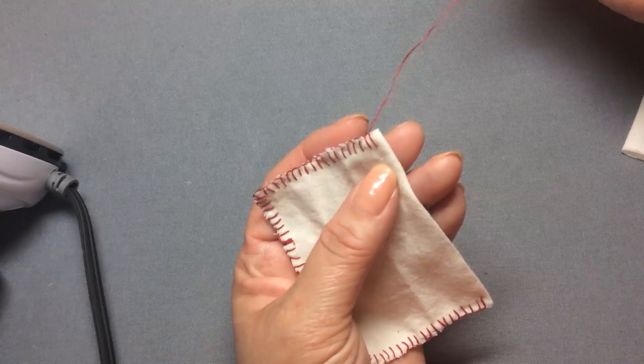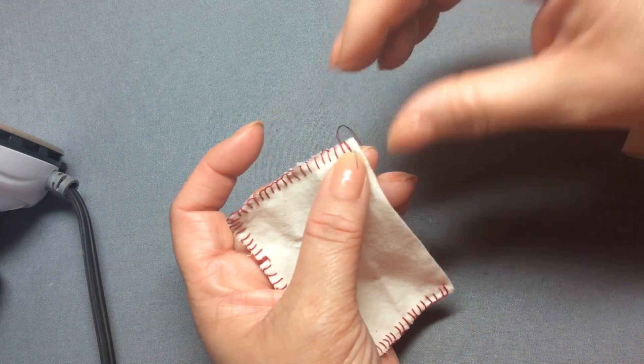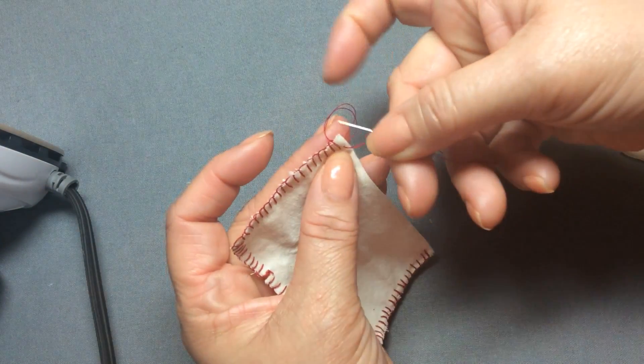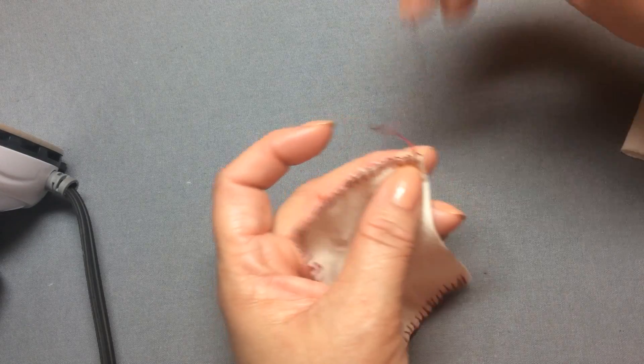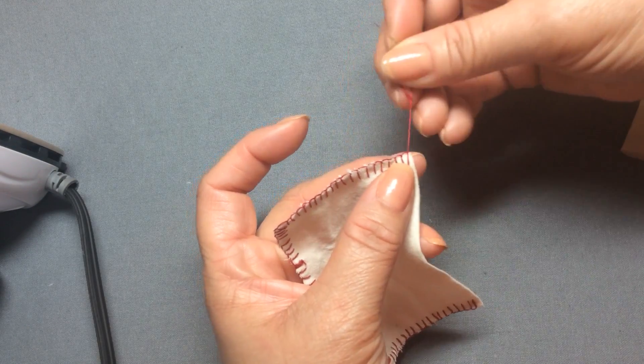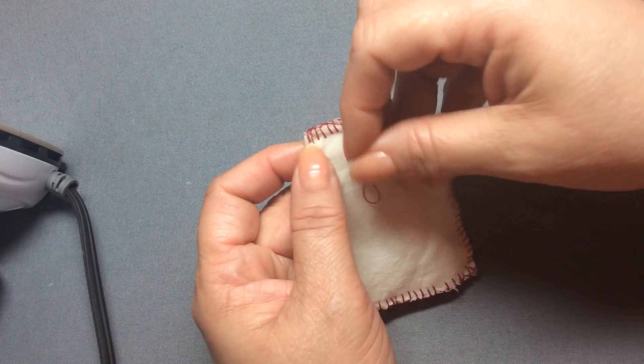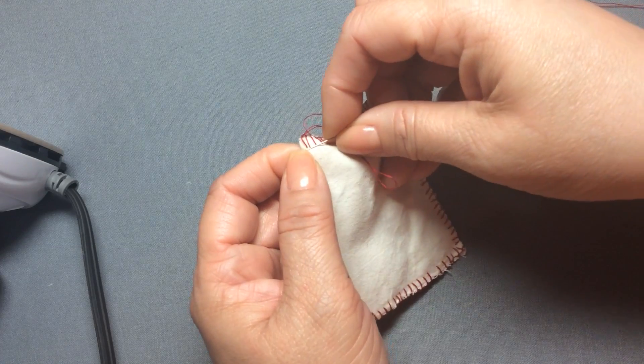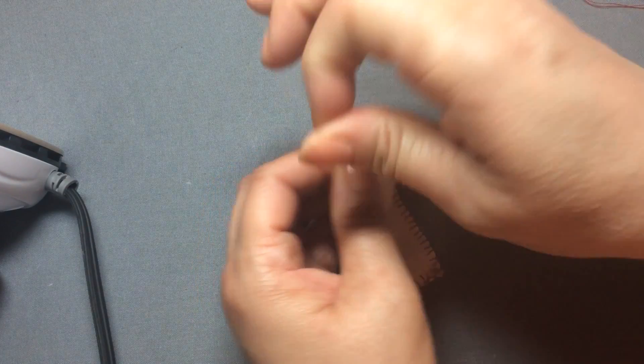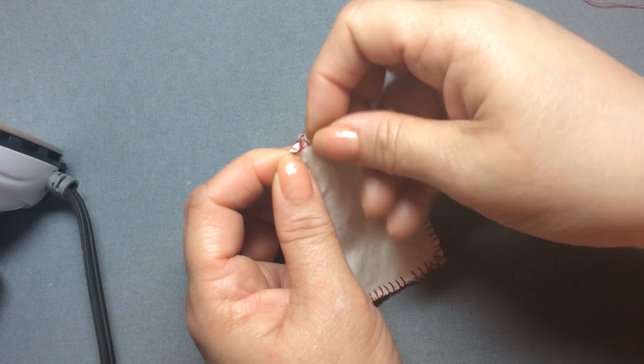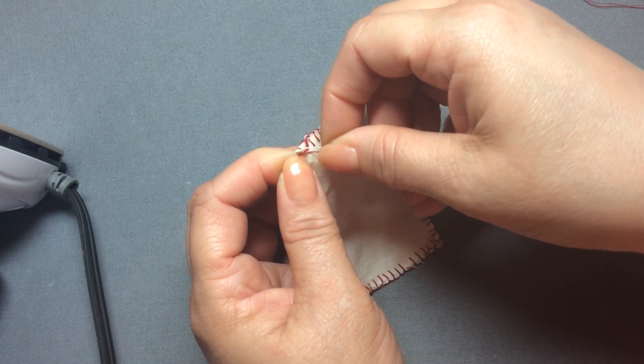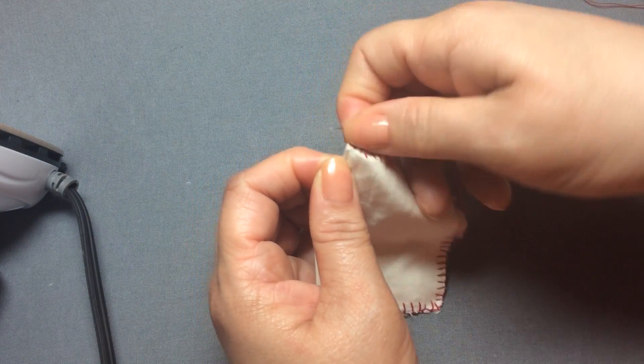What you would do is probably take your last stitch and bring it to the back, whatever side is your back, and do the same thing you always do with any stitching. You just kind of take a tack stitch or knot off. Oops, see, I pulled way too tight. Straighten that out.